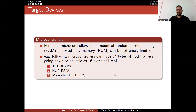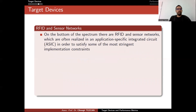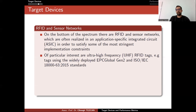Implementations and performance are really affected by memory, so when designing an algorithm you also need to consider how much memory you need to perform operations efficiently. Aside from microcontrollers, we also have to look at RFID and sensor networks. At the bottom of the spectrum, RFID and sensor networks are often realized in an application-specific integrated circuit, or ASIC, in order to satisfy the most stringent implementation constraints.